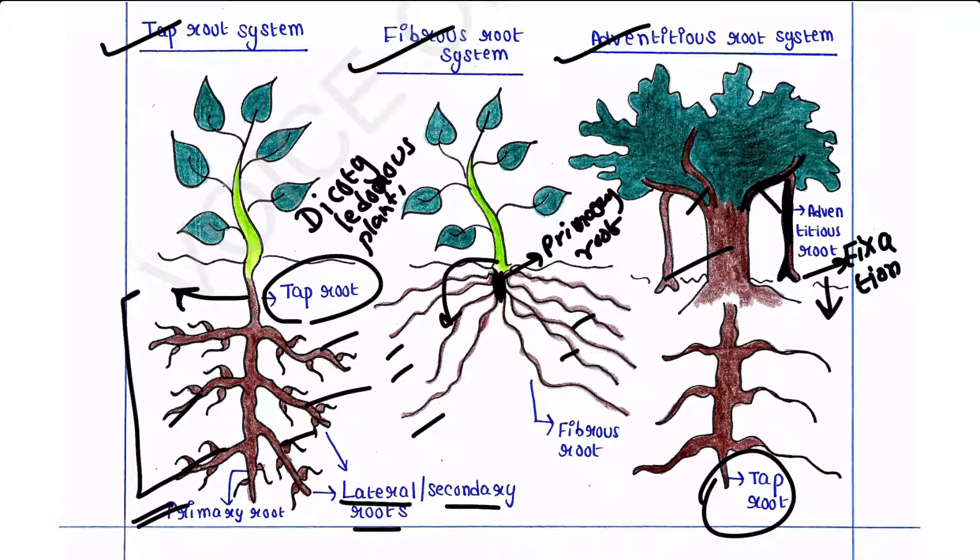These are the three main types of root system.